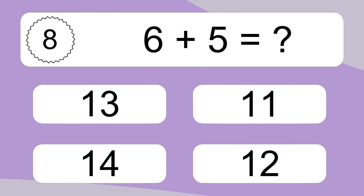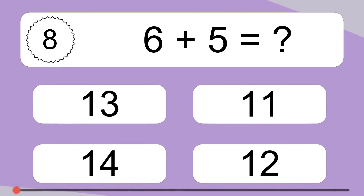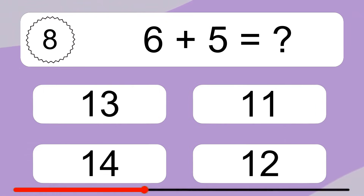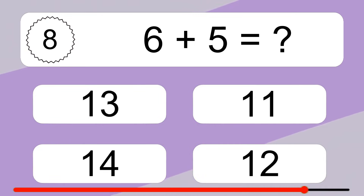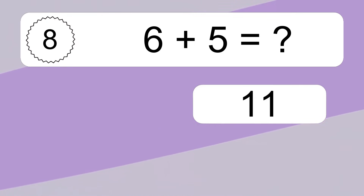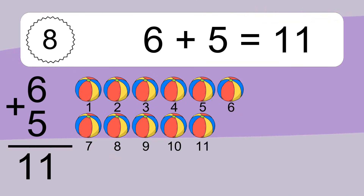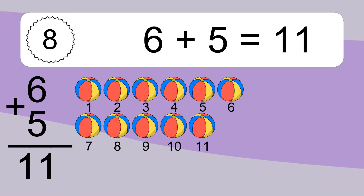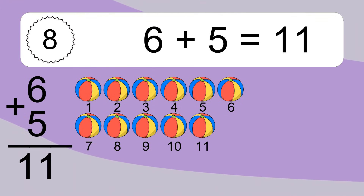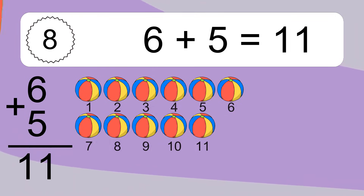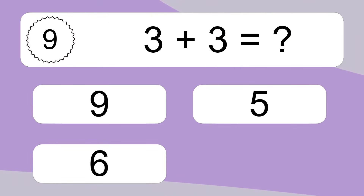Six plus five equals what? Six plus five equals eleven. Let's count it: one, two, three, four, five, six, seven, eight, nine, ten, eleven.